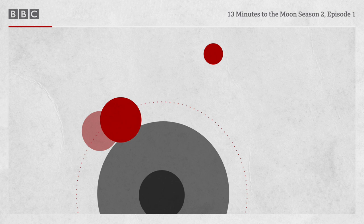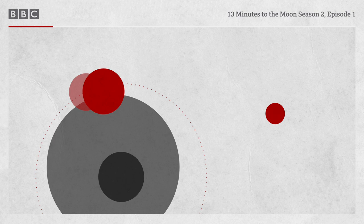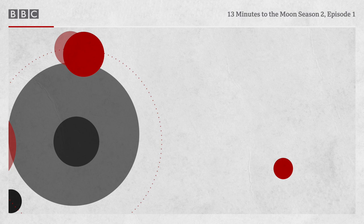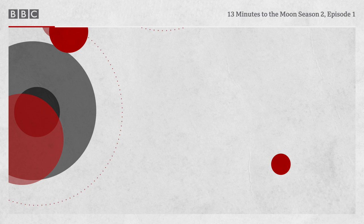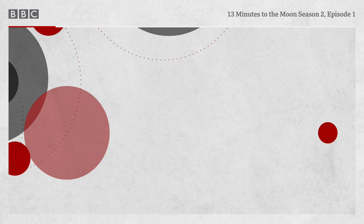This is Apollo Saturn launch control. We're just passing the one-hour mark in our countdown toward the launch of Apollo 13. Apollo 13 was NASA's third bid to land people on the Moon. It came just nine months after the triumph of Apollo 11, which saw Neil Armstrong's famous small step win the space race, leaving the United States victorious over the Soviet Union.